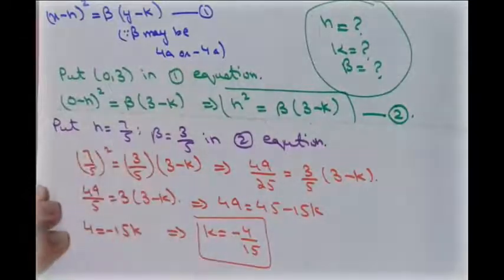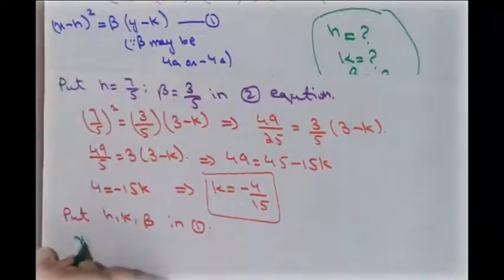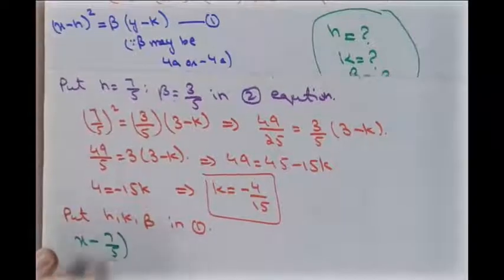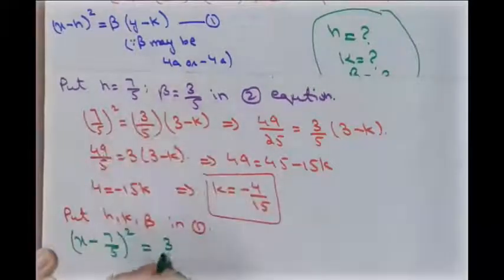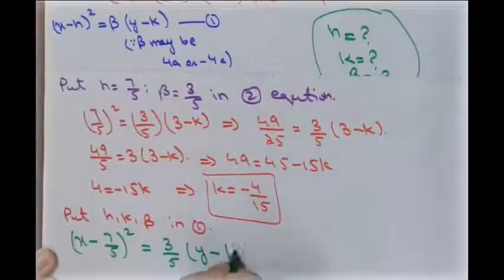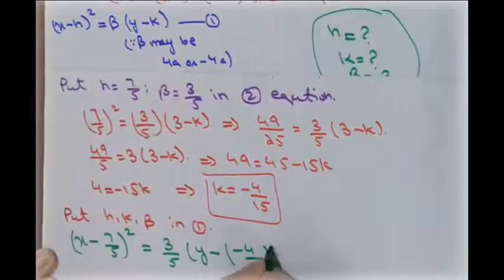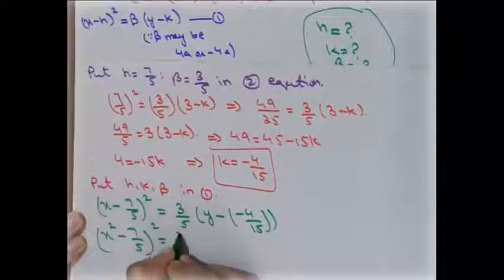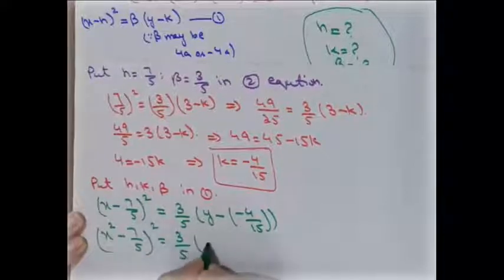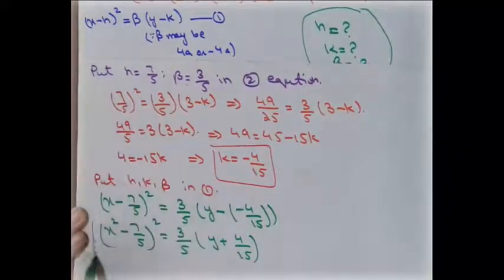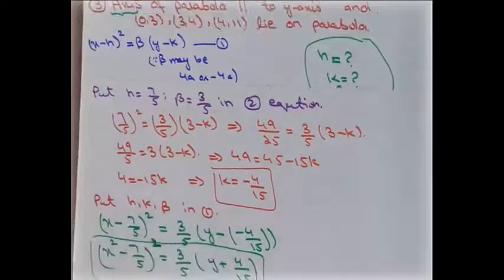Putting h = 7/5, k = -4/15, and beta = 3/5 into the first equation: (x - 7/5)² = (3/5)(y - (-4/15)), which gives (x - 7/5)² = (3/5)(y + 4/15). This is the final equation of the parabola for the third example.